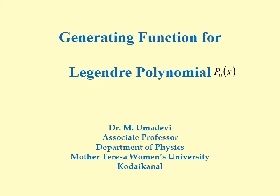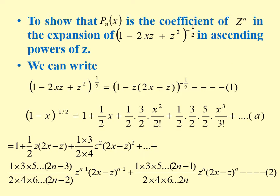We will see how to find the generating function for the Legendre polynomial Pn of x. That is, to show that Pn of x is the coefficient of z power n in the expansion of (1 minus 2xz plus z squared) whole power minus half, in ascending powers of z.